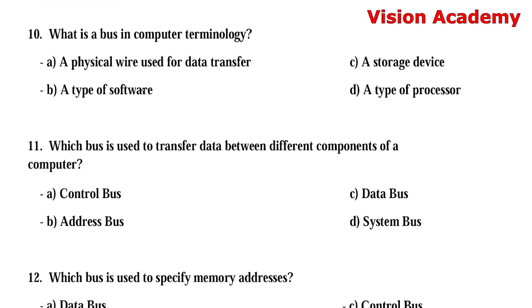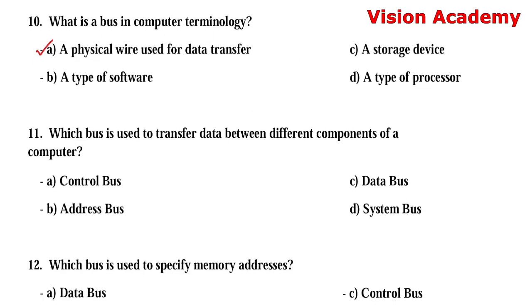Question number 10: What is a bus in computer terminology? Option A: a physical wire used for data transfer. Option B: a type of software. Option C: a storage device. Option D: a type of processor. The right answer is Option A, a physical wire used for data transfer.